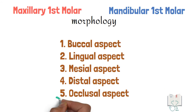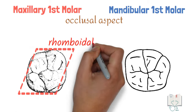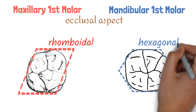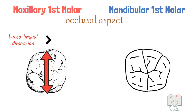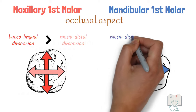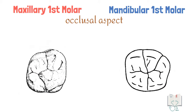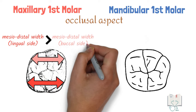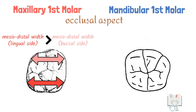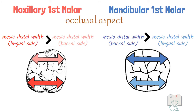Finally, the occlusal aspect. The outline form of maxillary first molar is rhomboidal, whereas the outline form of mandibular first molar is hexagonal. In maxillary first molar, the buccolingual diameter is more than its mesiodistal diameter, whereas in mandibular first molar the mesiodistal diameter is greater than its buccolingual diameter. Additionally, in maxillary first molar the mesiodistal diameter in the lingual half is more than in the buccal half, however in mandibular first molar the mesiodistal diameter in the buccal half is more than the lingual half.